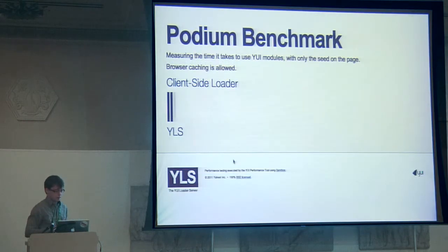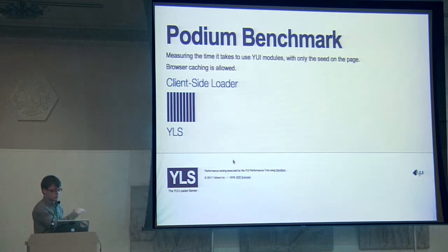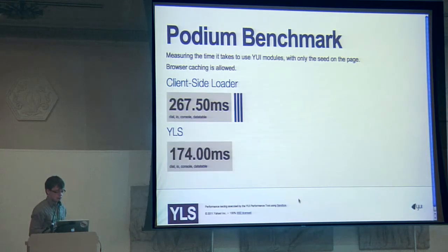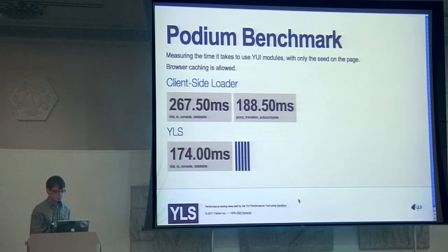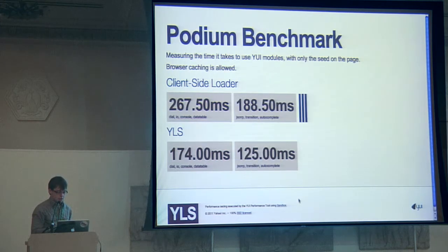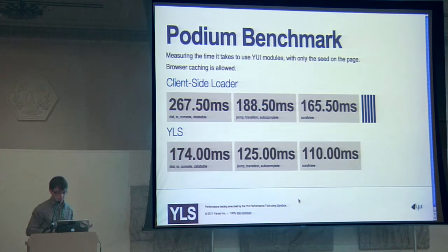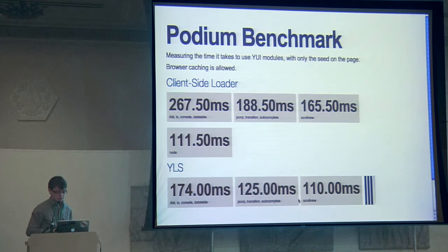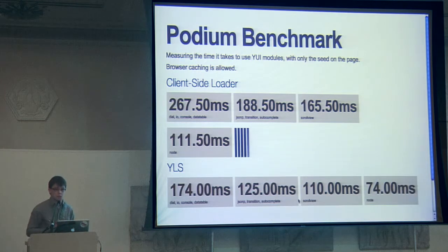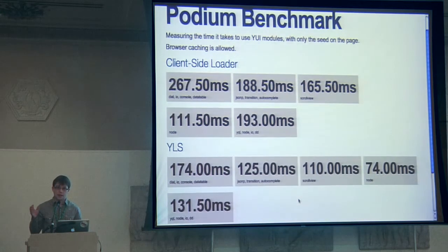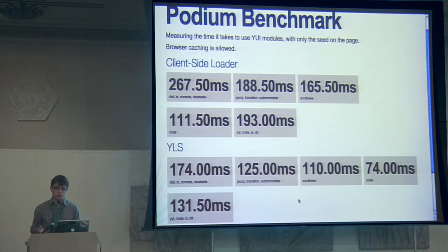This is running on Chrome, and we're showing loading various combinations of modules: client-side loader versus YLS. It can vary, but it's always faster — sometimes dramatically. And this is even more profound on mobile devices. Even with the latest iOS, we're seeing differences of things cut in half — like 900 milliseconds all the way down to 450.